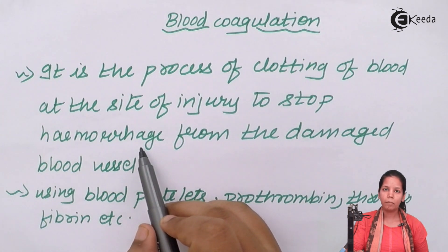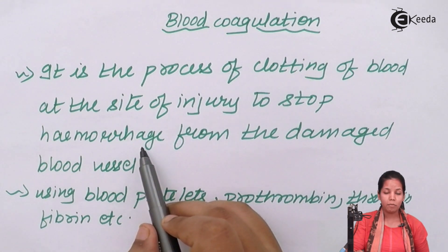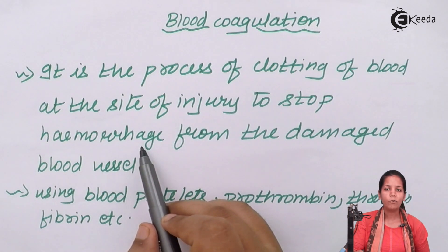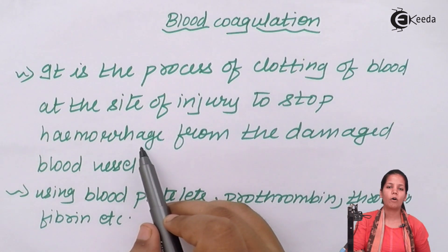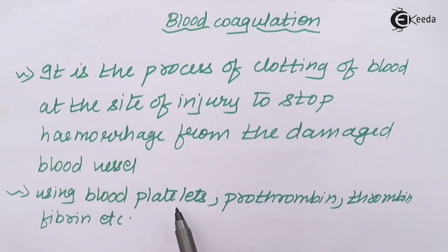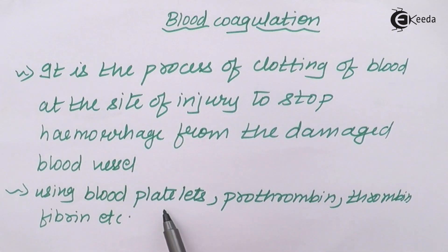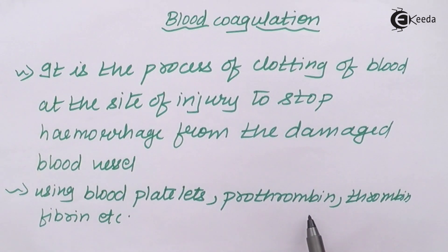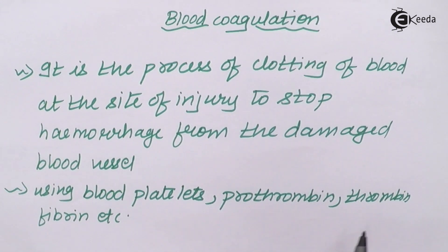In hemophilic patients, in which clotting factors are absent, this clotting mechanism doesn't work. Whenever there's a small cut or incision in a normal person's body, the clotting mechanism starts working and gets activated. This includes the use of blood platelets, prothrombin, thrombin, fibrinogen, etc.